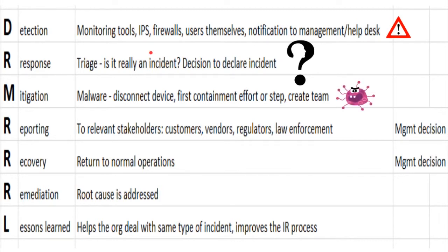The M is for mitigation. Think of what typically happens with malware — the device is disconnected, or could be disconnected. Not every organization would do that. This is the first containment action that occurs.